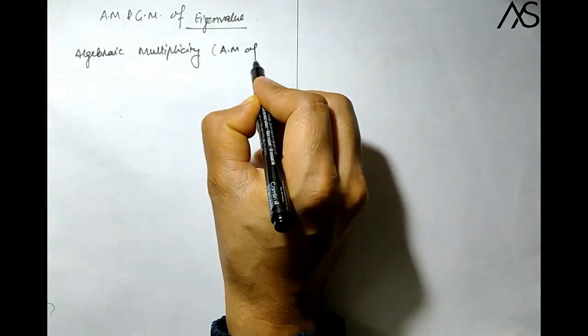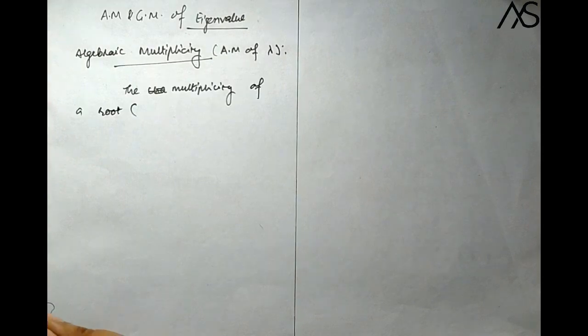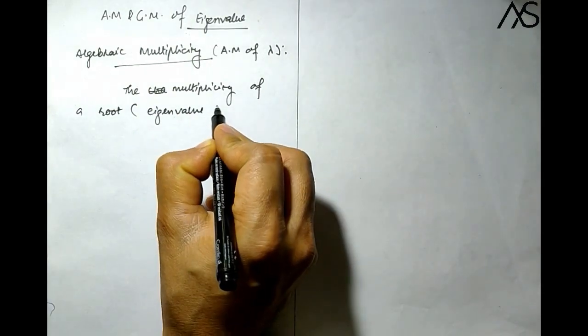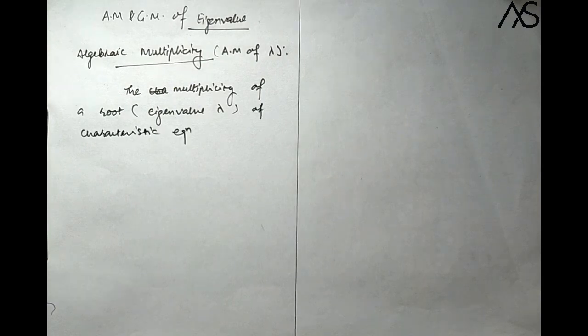Algebraic multiplicity (AM) of an eigenvalue lambda: the multiplicity of a root of the characteristic equation is known as the algebraic multiplicity of an eigenvalue. Here 'root' means the eigenvalue lambda.